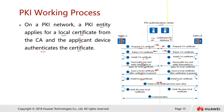Once both firewalls have installed their local certificates, they share their local certificates with each other. The certificate includes detailed information: a fingerprint, the digital signature of the CA, and the public key. From Firewall B's point of view, it receives the public key of Firewall A, and vice versa.